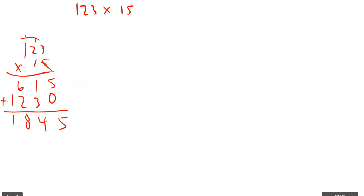So if I had the problem of 123 times 15, for example, I could do standard algorithm. 123 times 15: 5 times 3 is 15, 5 times 2 is 10 plus 1 is 11, 5 times 1 is 5 plus 1 is 6. Then 0, 1 times 3, 1 times 2, 1 times 1. Add my two partial products together: 5, 4, 8, 1—1,845. So that's standard algorithm.